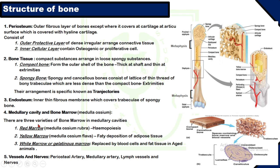There are three types of bone marrow in the medullary cavity. Number one, red bone marrow — called medulla osseum rubra — where hemopoiesis takes place; it is the site where RBCs, WBCs, and platelets are formed. The second is yellow marrow — called medulla osseum flava — which contains fatty deposition of adipose tissue. The third is white marrow, or gelatinous marrow, which is replaced by blood cells and fat tissue in aged animals.